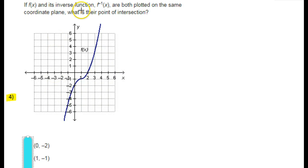If f(x) and its inverse function f inverse of x are both plotted on the same coordinate plane, what is their point of intersection? Well, a function and its inverse will always be a reflection over the line